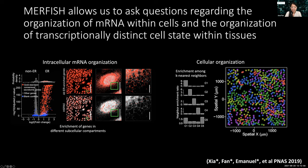We can also move from the subcellular to the cellular level and ask what types of cellular organization we can see — whether certain transcriptionally distinct cell states are spatially co-localized with other cell states. We examined the K nearest neighbors of each cell state to see the distribution of neighboring cell states. This was a culture system, so it wasn't particularly interesting, but we've now begun applying these methods to tissues, which are a lot more exciting.